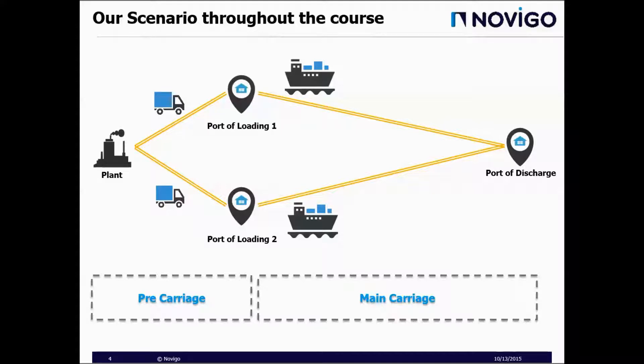Our transportation network has two stages. Stage 1, or pre-carriage, is a road leg and will be done by trucks. Stage 2, or main carriage, is an ocean leg and will be done with ships.